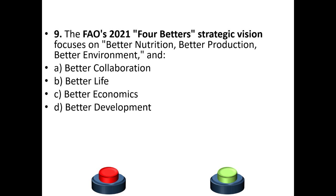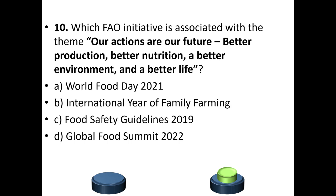Question 9: The FAO's 2021 Four Betters strategic vision focuses on better nutrition, better production, better environment, and — fill in the blank: a) better collaboration, b) better life, c) better economics, or d) better development. The answer is option B — better life.